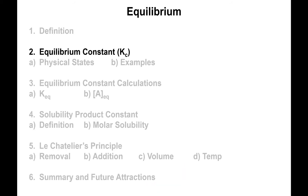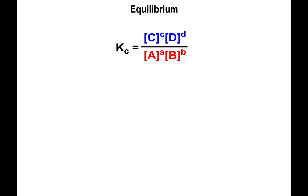So let's define a few things regarding the equilibrium constant. The equilibrium constant Kc has the expression: products raised to their balancing coefficients over reactants raised to their balancing coefficients. The 'c' in Kc stands for concentration — all values for C, D, A, and B are in molarity.